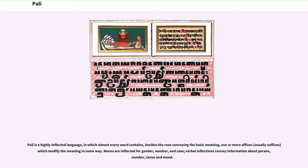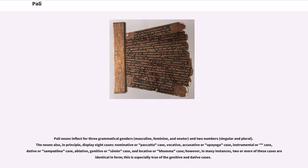Pali is a highly inflected language, in which almost every word contains, besides the root conveying the basic meaning, one or more affixes which modify the meaning in some way. Nouns are inflected for gender, number, and case; verbal inflections convey information about person, number, tense, and mood. Pali nouns inflect for three grammatical genders and two numbers. Nouns also, in principle, display eight cases: nominative, vocative, accusative, instrumental, dative, ablative, genitive, and locative. However, in many instances, two or more of these cases are identical in form; this is especially true of the genitive and dative cases.